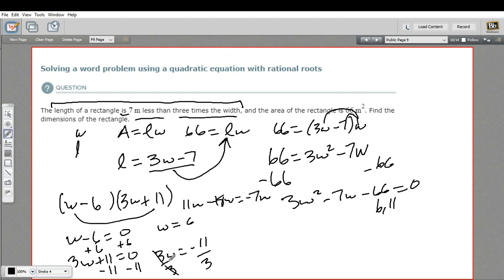So we've got two answers, which happens often when we factor a quadratic. Which one is the right answer? Well, only one of these makes sense in the context of the problem. We're looking for the width of a rectangle. A negative number for the width of a rectangle really wouldn't make sense. So our width has to be 6. So that's the width. We're being asked to find the width and the length. Well, the length here, we can go back to this formula and just plug in the 6. So that'd be 3 times 6 is 18 minus 7. So the length would be 11.